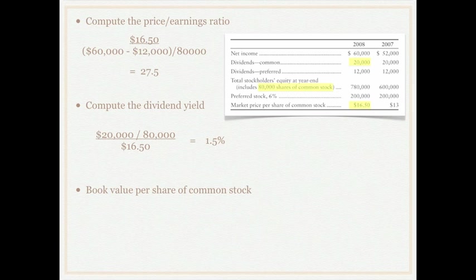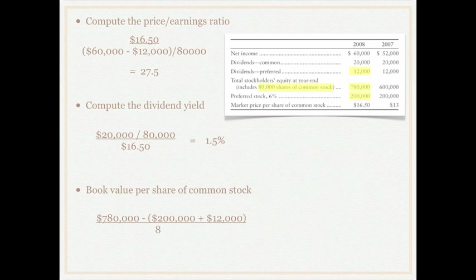For the book value per share of common stock, we take total stockholders' equity of $780,000 less the book value of preferred stock — which is preferred stock of $200,000 plus preferred dividends of $12,000 — and divide all that by 80,000 shares of common stock outstanding. This gives us a book value per share of $7.10, meaning one share of common stock has $7.10 of equity in the company.